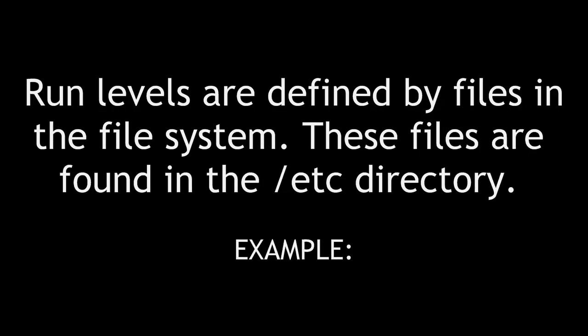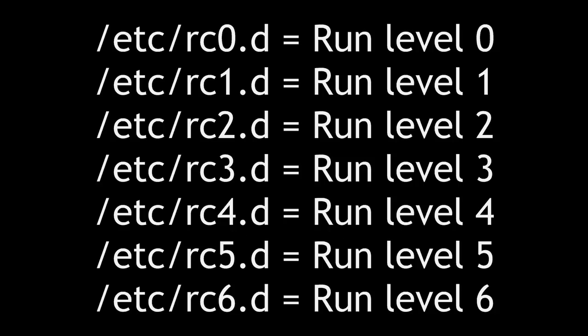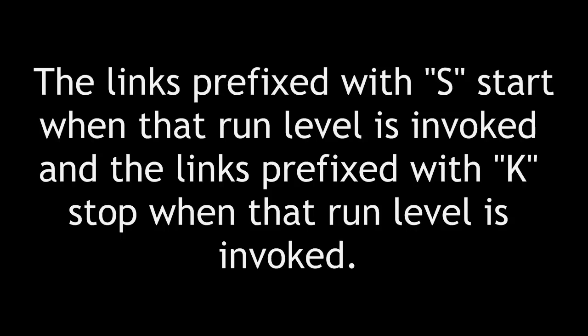Run levels are defined by files in the file system. These files are found in the /etc directory. The following lists directories for run levels 0 through 6 in the /etc folder. Inside these run level directories are links to daemons, shell scripts, and programs that start and stop when that run level is invoked. The links prefixed with S start when that run level is invoked, and the links prefixed with K stop when that run level is invoked.